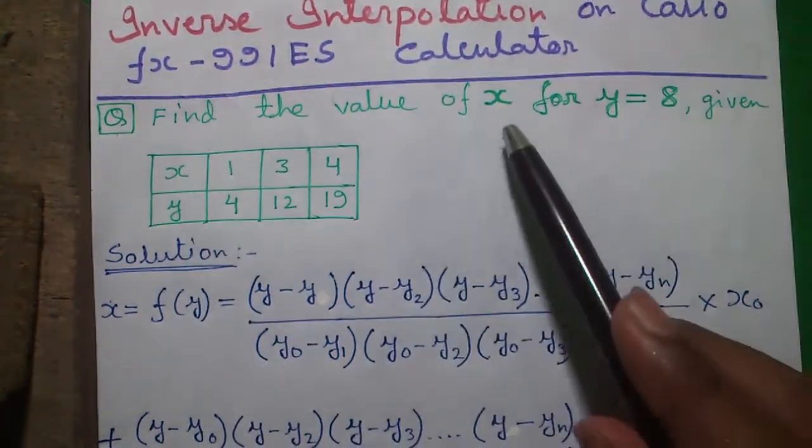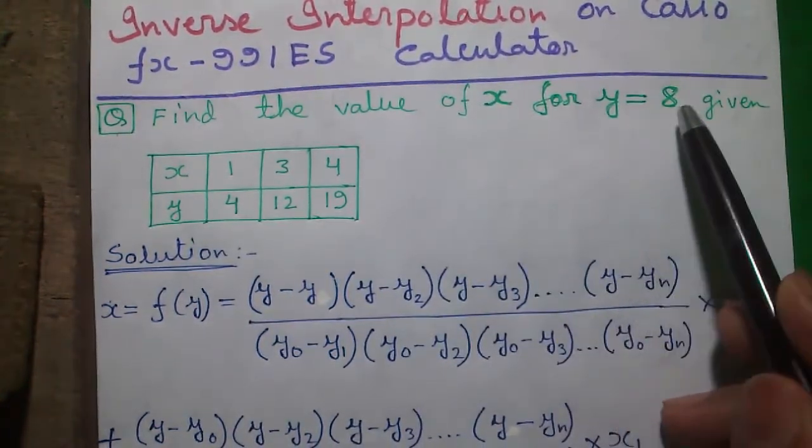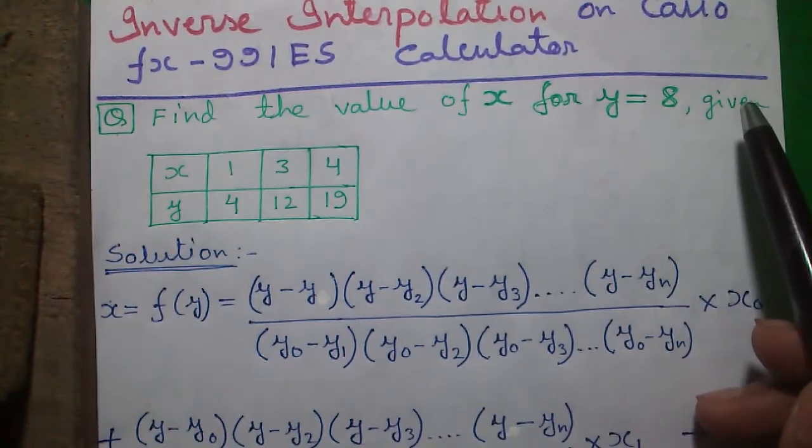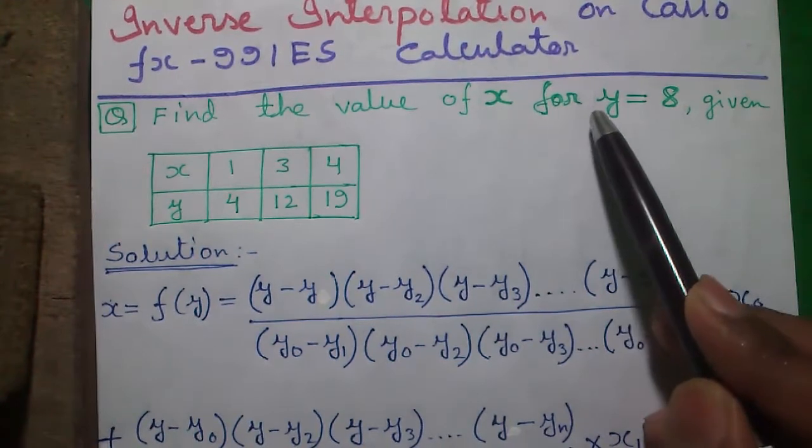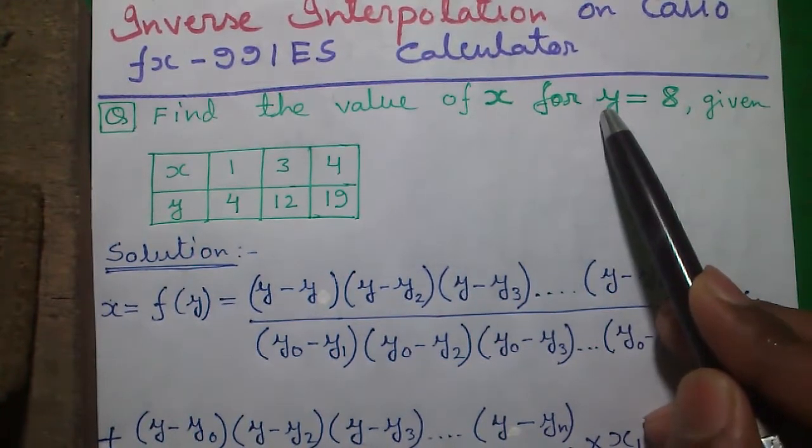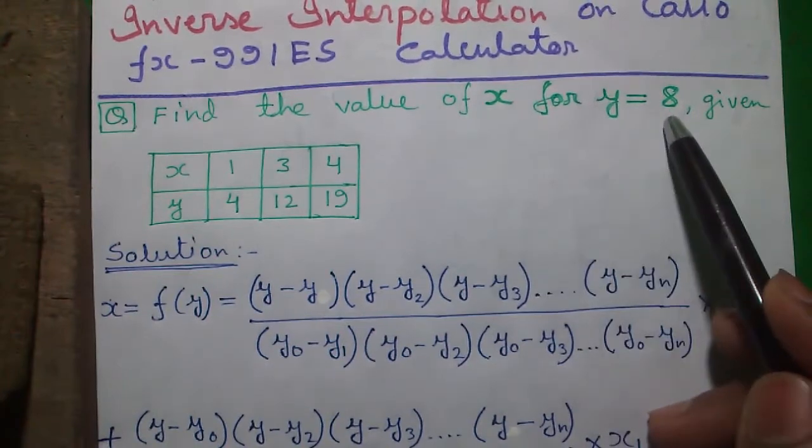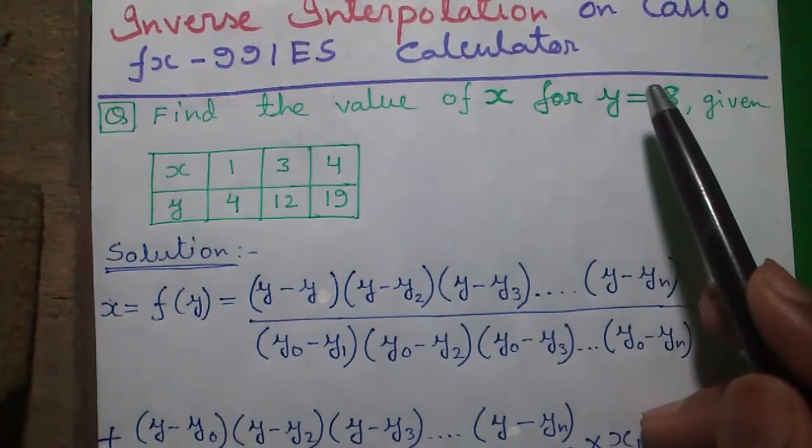Our question is find the value of x for y equals to 8. It's called inverse interpolation because in Lagrange interpolation we find the value of y for given value of x, but here we are finding the value of x for given value of y, that's why it's called inverse interpolation.